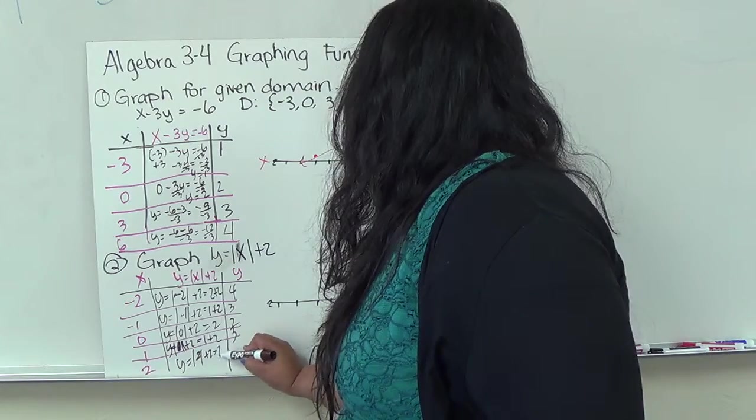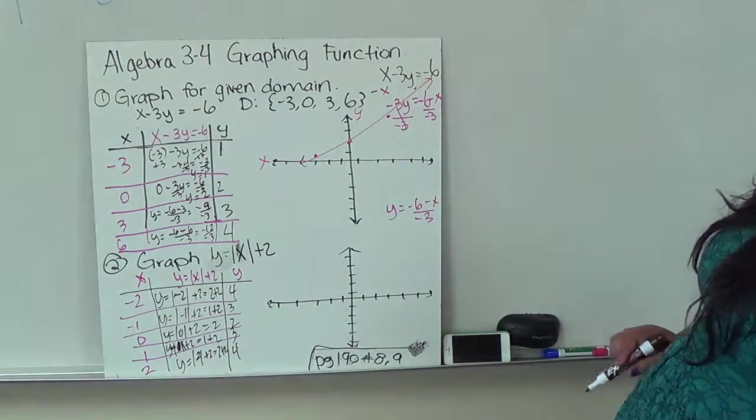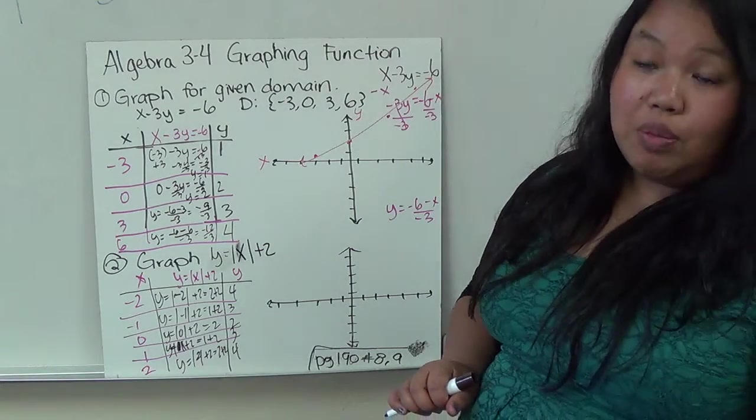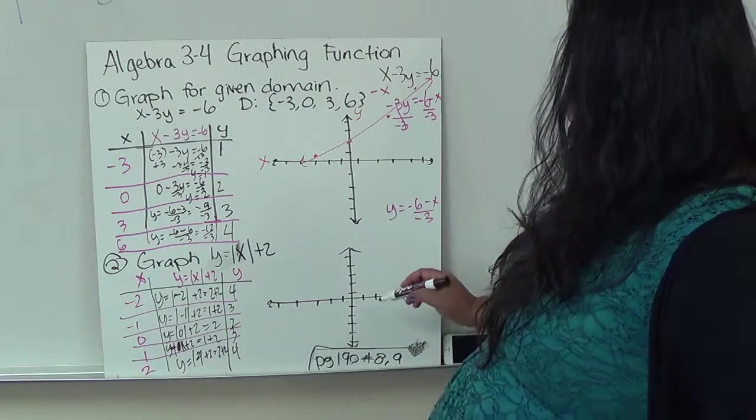So we have some repeats on here. So it's not going to be a line. Usually, most of the time when you're seeing absolute value, you're not going to see a line.